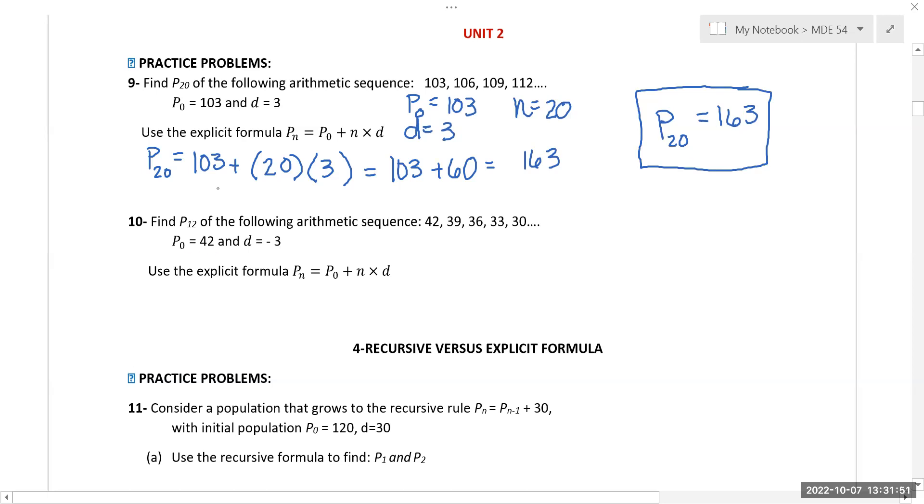For the next one, what's P_12? So n is 12, d is now negative 3, and P_0 is 42. P_12 equals 42 plus 12 times negative 3. That just becomes a minus, so P_12 equals 6. Really helpful to just have that formula written there so you know what you're looking at.